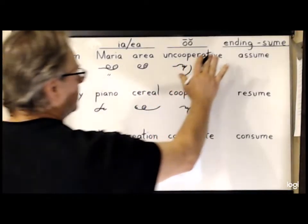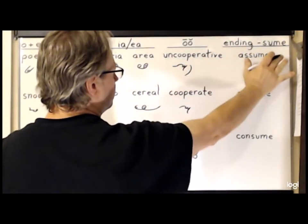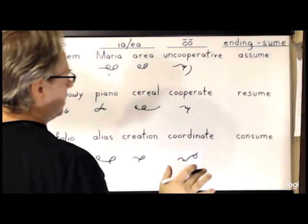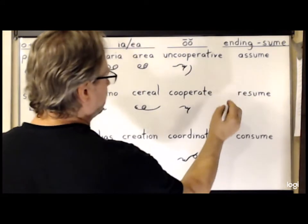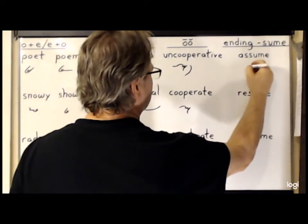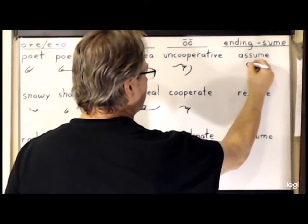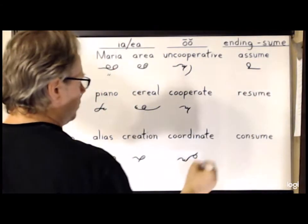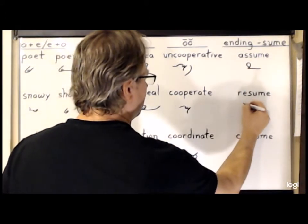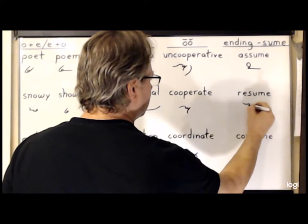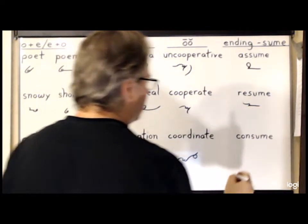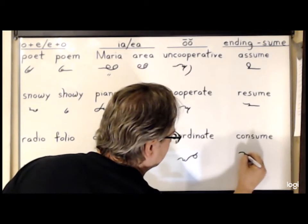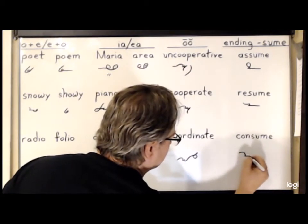And lastly, the ending in '-sume' or S-U-M-E — the U hook is omitted. So the word 'assume' is A-S-M, 'resume' is R-S-M, and finally 'consume', K for the C-O-N, S-M.